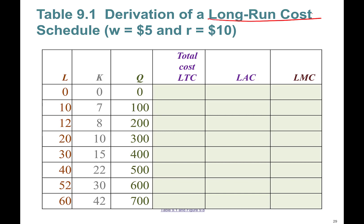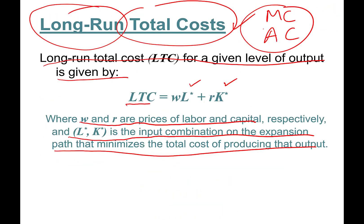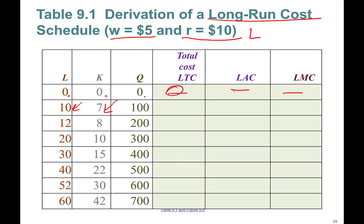This is the derivation of long-run cost schedule. We're going to imagine wage rate is $5 per hour and the rental rate of capital is $10. If you hire zero workers and zero capital, you produce nothing and cost is zero. When you hire 10 workers and 7 capital, long-run total cost is wL + rK, so 5 times 10 plus 10 times 7, which is 120.